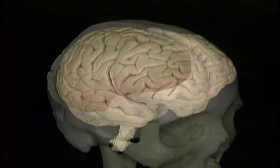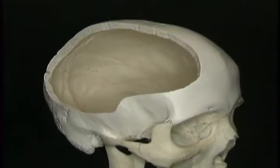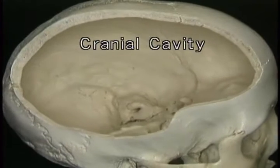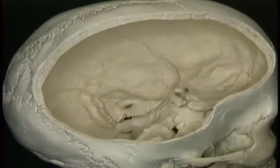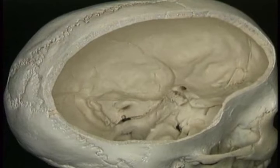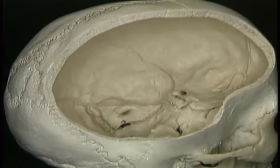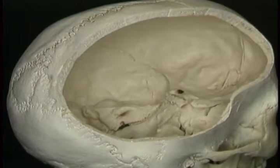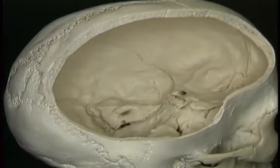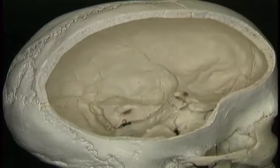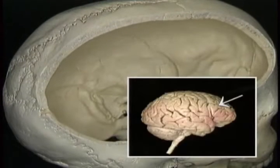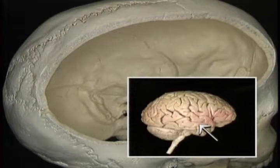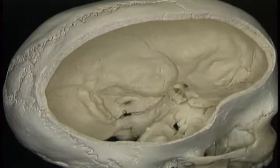The brain is contained within the cranial cavity. Here's the cranial cavity in a dry skull — it's almost the same shape as the brain. Two big steps divide the floor of the cavity into three parts. The sphenoid ridges separate the anterior cranial fossa from the middle cranial fossa. The frontal lobe occupies the anterior cranial fossa, and the temporal lobe occupies the middle cranial fossa.